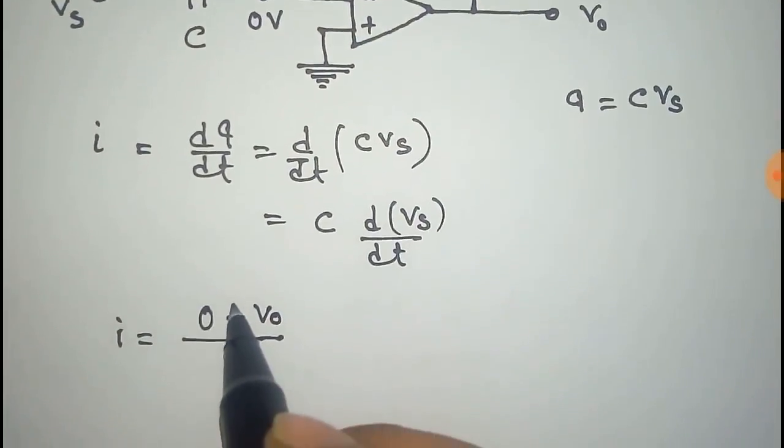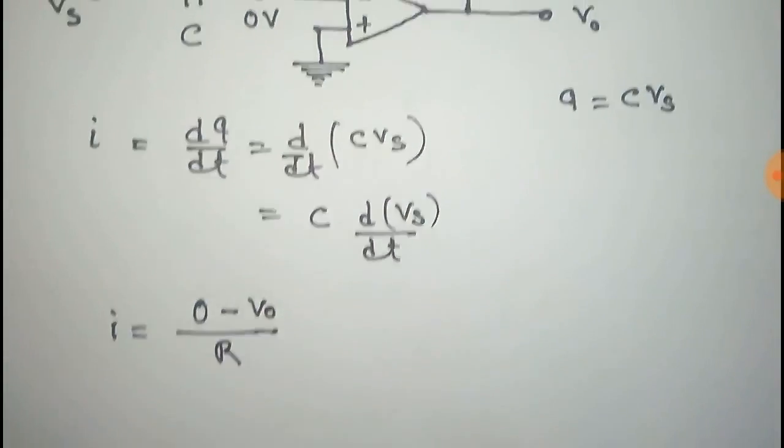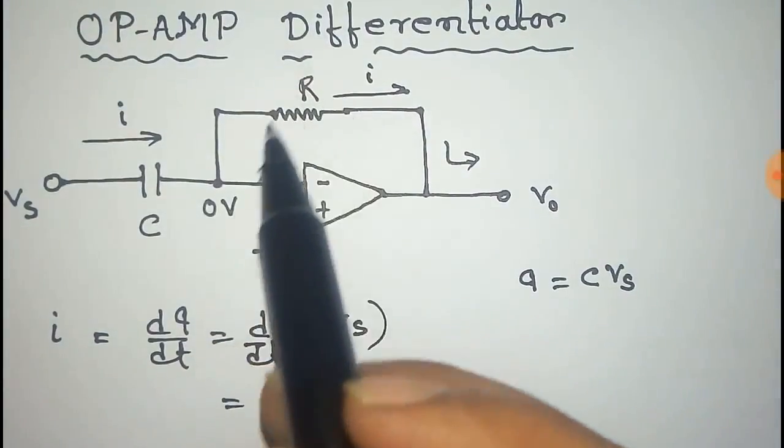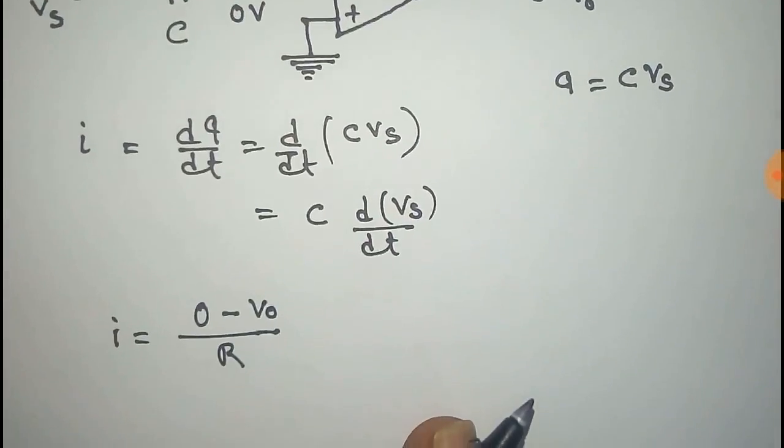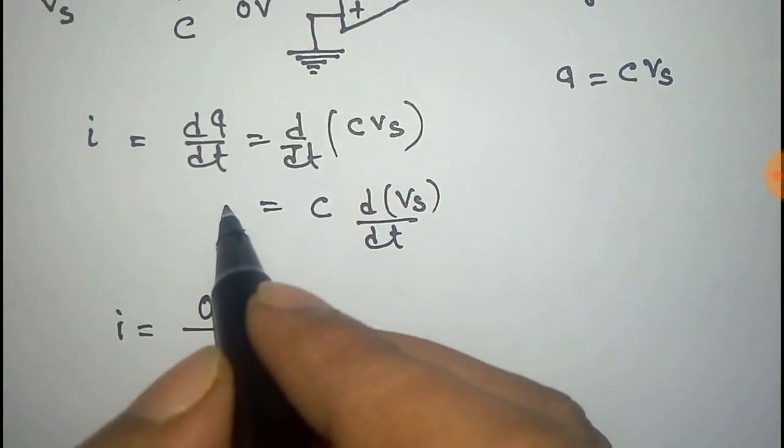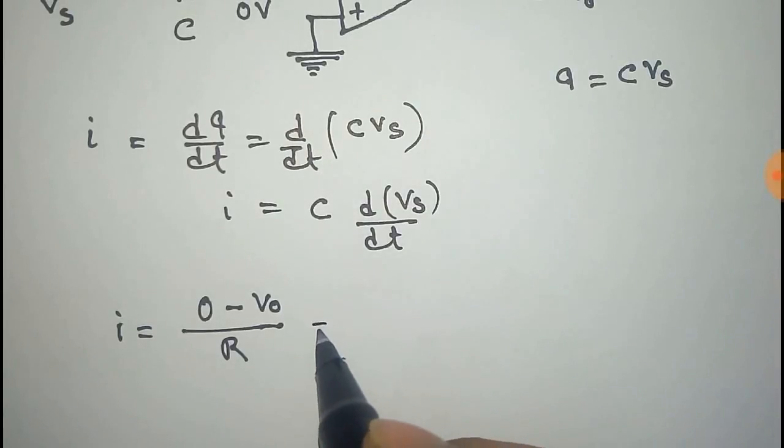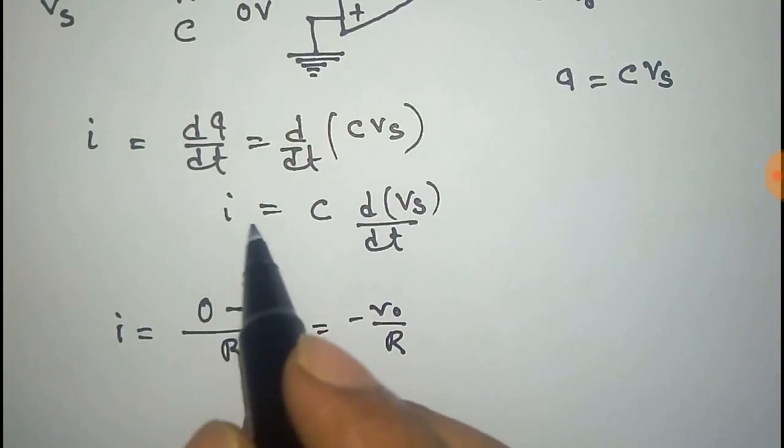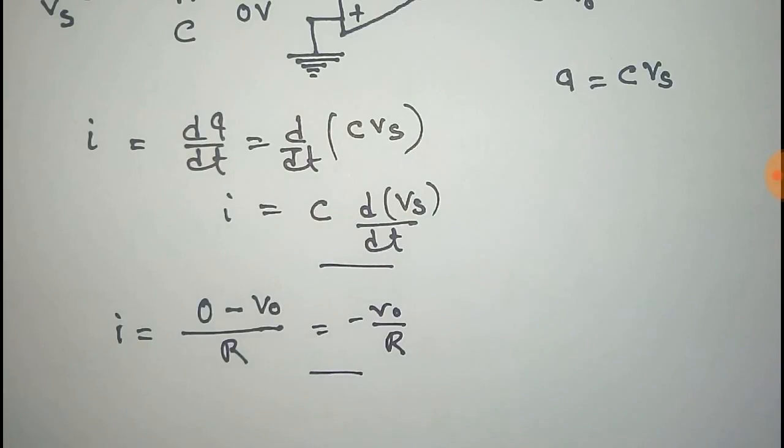Because it is zero, this is Vo. Now this is equal to i, and this is equal to -Vo/R. Now equating these two relations we get: